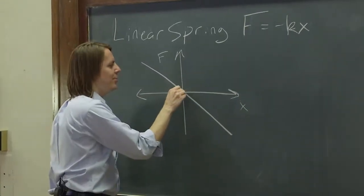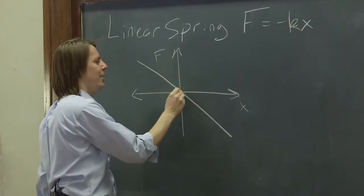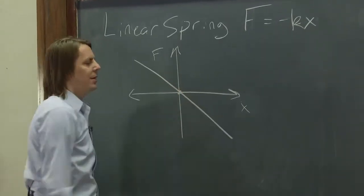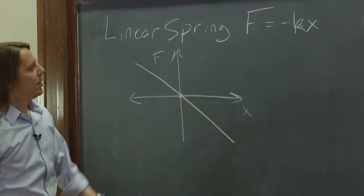This is the point of stable equilibrium where the force is zero. If you move this way, it pushes back. If you move this way, it pushes back. That's why we have oscillation around that point.